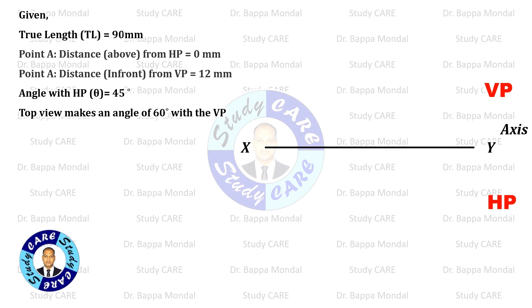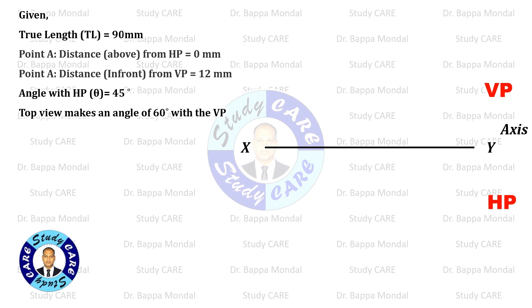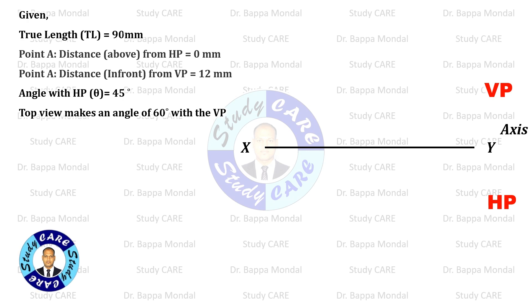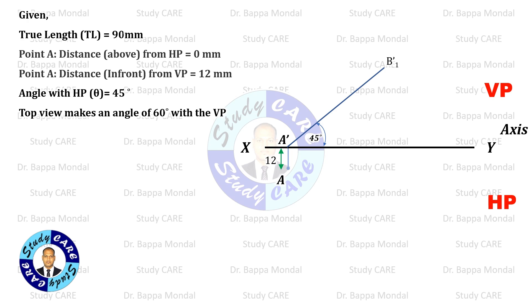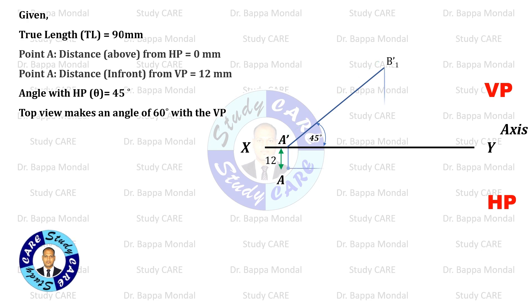First, draw the XY axis line. The upper side of the axis is the vertical plane and the lower side is the horizontal plane. In third angle projection, the front view will be reflected in the VP and the top view will be reflected in the HP. Take point A on the axis and point A in the HP at a distance of 12 mm from the axis. Now draw a line 90 mm long at an angle of 45 degrees with the axis. Draw the reference lines as shown.